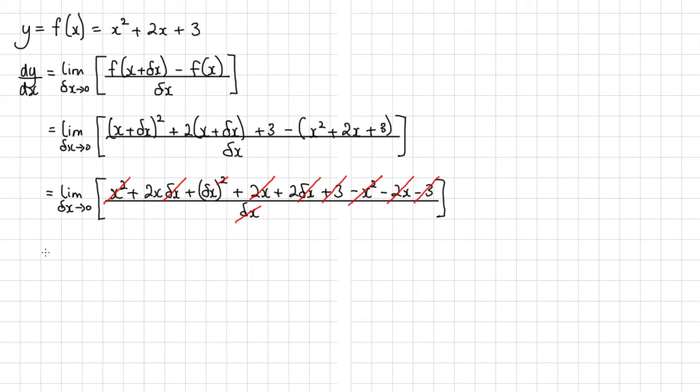So what I'm actually left with is the limit as delta x tends to zero. I've got the 2x here. I've got the delta x. And I've got the 2 here.